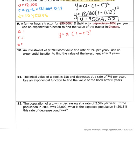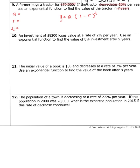Jump down to number 12: the population of a town is decreasing at a rate of 2.5% per year. If the population in 2000 was 28,000, what is the expected population in 2015 if the rate of decrease continues? Write down your initial population, your decay rate, and your time — how much time passes between 2000 and 2015 — then plug everything into your exponential decay formula. That concludes the video on exponential growth and decay word problems. If you have any questions, do not hesitate to ask.